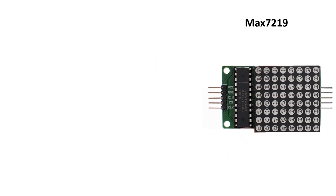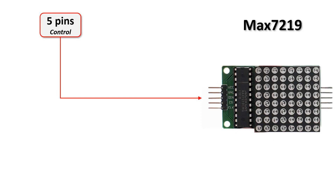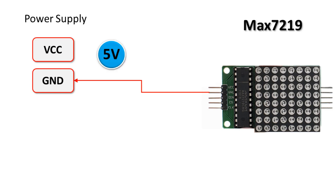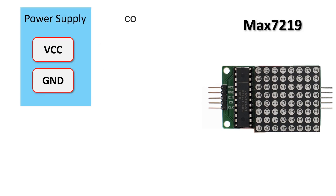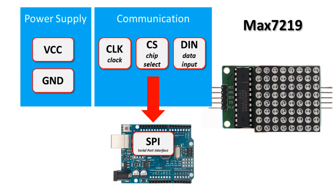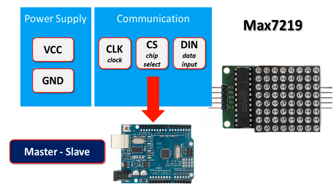The MAX-7219 circuit provides a 5-pin control interface. Two power pins labeled VCC and GND to supply 5 volts, and three serial-type communication pins labeled DIN, CLK, and CS, which we will connect to the SPI serial interface of the Arduino board.